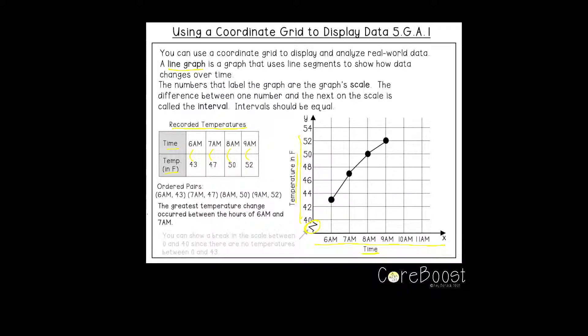So I can use those numbers to create ordered pairs: 6am and 43, 7 and 47, 8 and 50, and 9 and 52. So if we go to our coordinate grid, these points have been plotted already.